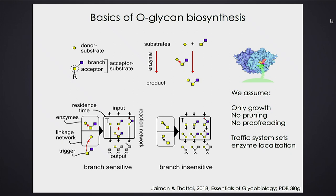These enzymes are chemically exquisitely specific. This enzyme attaches a yellow square–blue square combination to a yellow circle on the left carbon. Suppose I give it just a yellow square — nothing happens. Suppose I give it a yellow square with the blue square, but the blue square also has something on it — nothing happens. This enzyme only works if you have the yellow square with the blue square and nothing else. That's the level of enzyme specificity.